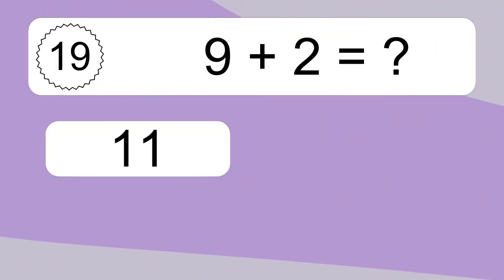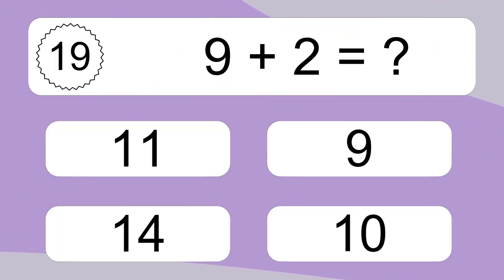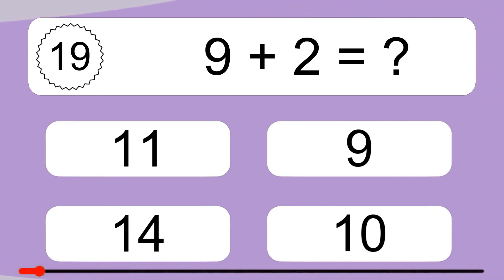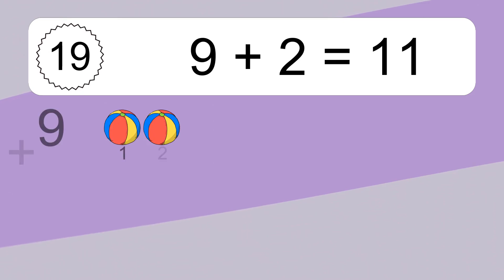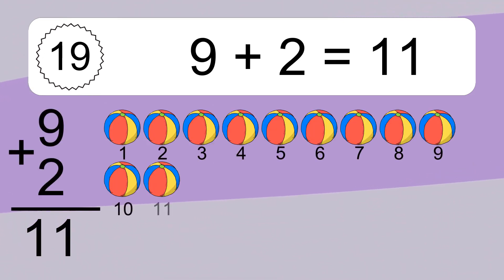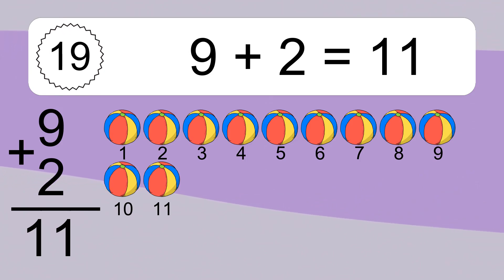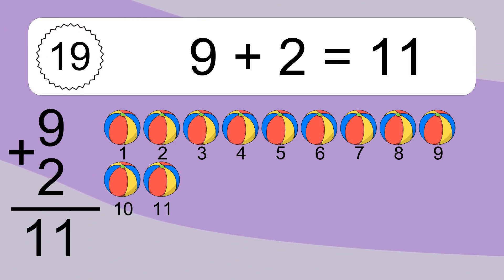9 plus 2 equals what? 9 plus 2 equals 11. Let's count it. 1, 2, 3, 4, 5, 6, 7, 8, 9, 10, 11.